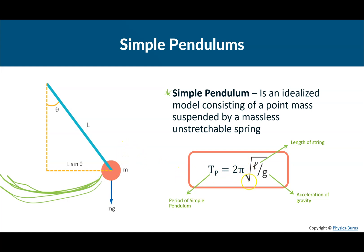The formula for simple pendulums: the period of a pendulum is equal to two pi times the square root of the length of the string divided by gravity — how much gravity is accelerating or pulling down on this mass. Let's do some examples to make this make sense.